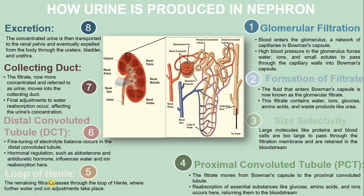Step five: the loop of Henle. The remaining filtrate passes through the loop of Henle, where further water and ion adjustment takes place. Step six: at the distal convoluted tubule, there is fine-tuning of electrolyte balance.